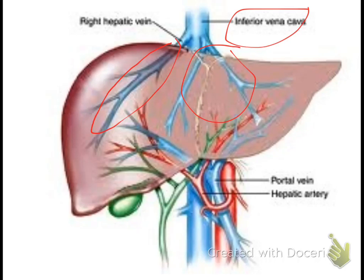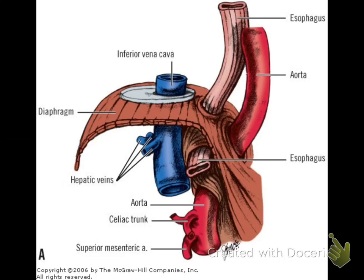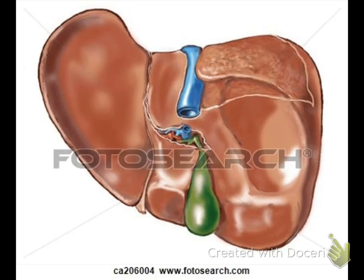After the hepatic veins drain into the inferior vena cava, the IVC immediately penetrates the diaphragm and drains into the right atrium of the heart. Here is a graph showing the hepatic veins draining the liver, then the IVC passing through the diaphragm to the right atrium.